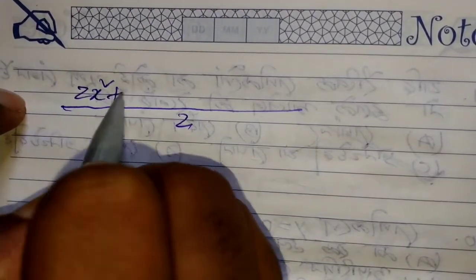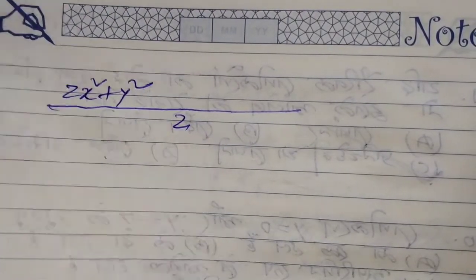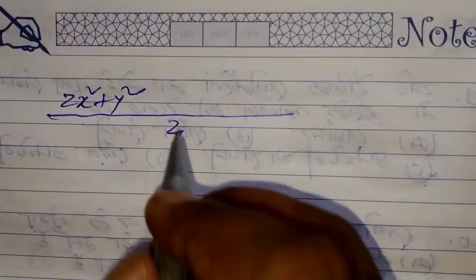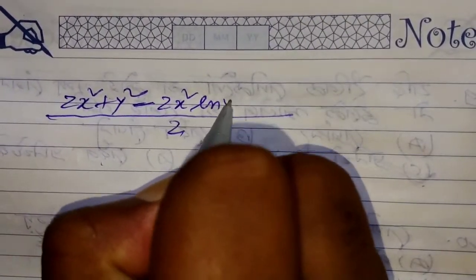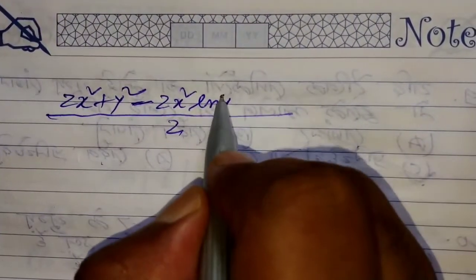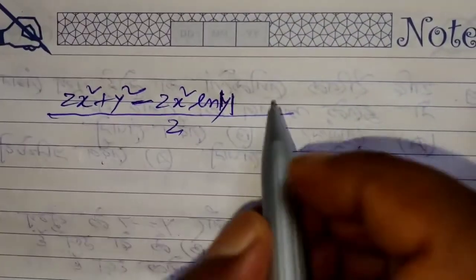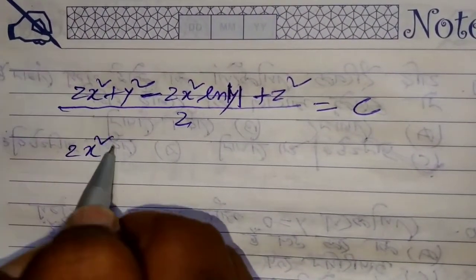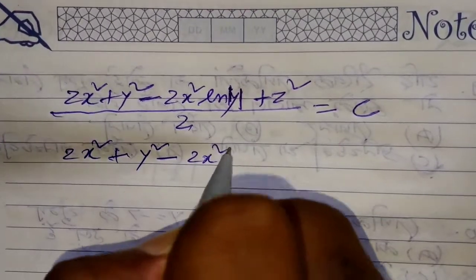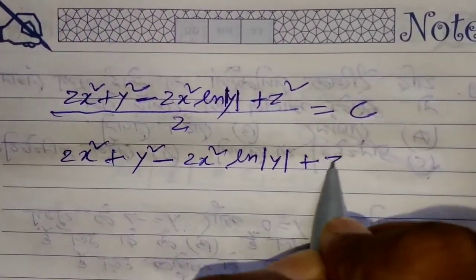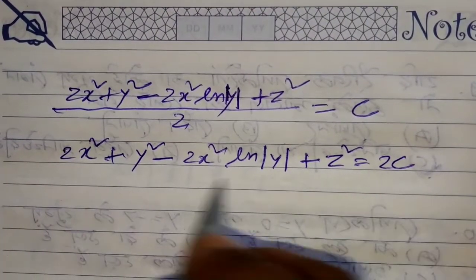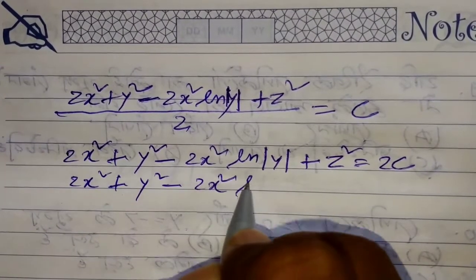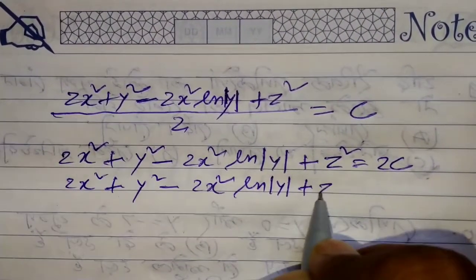x² + y²/2 - x²ln|y| + z²/2 = c. Multiplying by 2: 2x² + y² - 2x²ln|y| + z² = 2c.